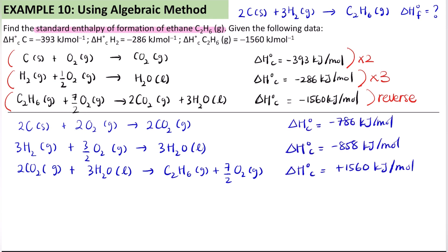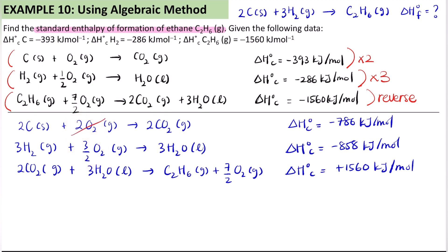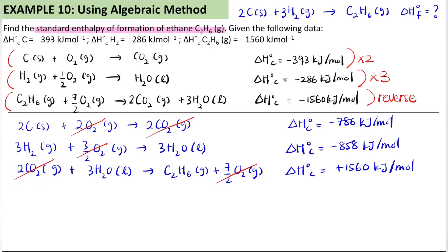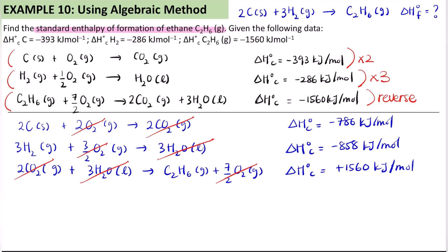Once that's done, we simplify the equation — we subtract species on opposite sides and add those on the same side. For oxygen: 2 + 3/2 = 7/2, so we cancel opposite species. For CO₂, we have 2 on both sides — cancel out. For H₂O, we have 3 on both sides — cancel out. What remains is our target equation.